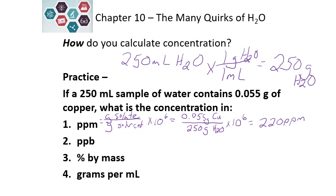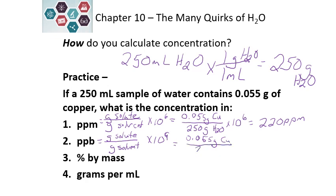For parts per billion, it's the same idea — grams of solute over grams of solvent — but now we multiply by a billion, or 10 to the ninth. So 0.055 grams of copper divided by 250 grams of water, times 10 to the ninth, gives us 220,000 parts per billion, or PPB.